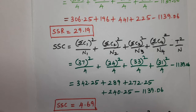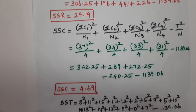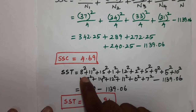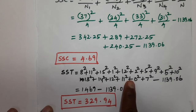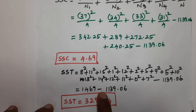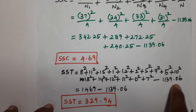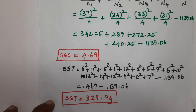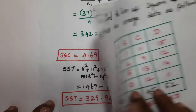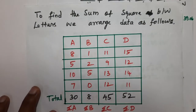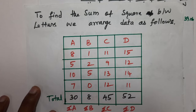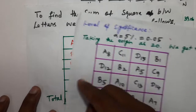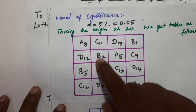SS_E is found after computing SS_T. The total sum of squares SS_T is calculated by summing all individual squared values in the table to get 1469, then subtracting the correction factor: SS_T = 1469 − 1139.05 = 329.94.